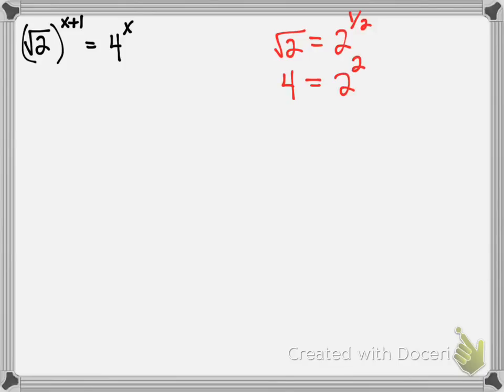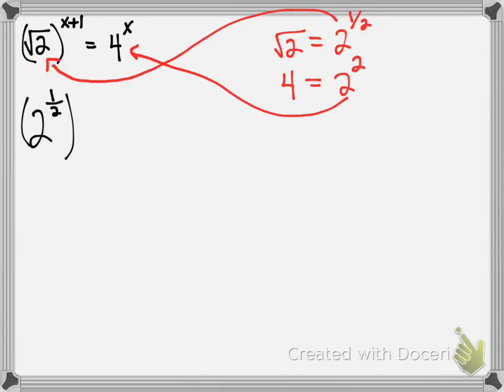Using this information I can substitute back in. This is going to go here, this is going to go here. So our new equation is going to be 2 to the half instead of the square root of 2, still has the x plus 1 power here, equals 2 squared (that's instead of the 4) but it's still got the exponent of an x.